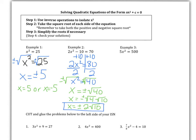Let's look at example 3: 5x squared equals 500. I don't have any tag-along, but I do need to divide both sides by 5, because that's my coefficient of x squared. So I have x squared equals 100. I like this, because I know that 100 is a perfect square. So when I take the positive or negative square root of both sides, I get x equals positive or negative 10, and that's my final answer.